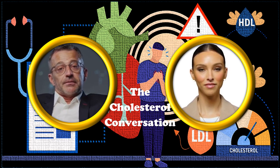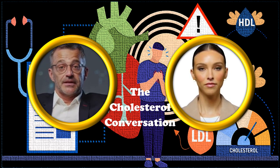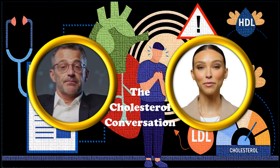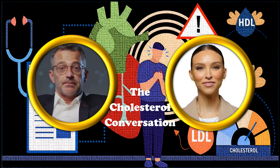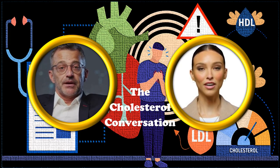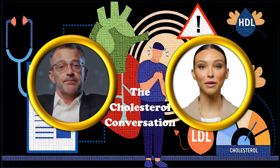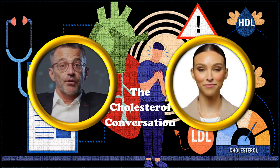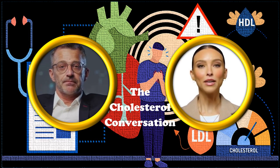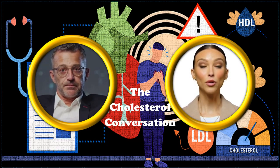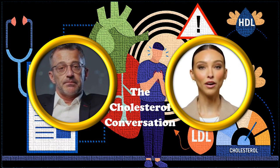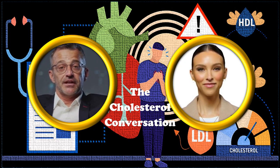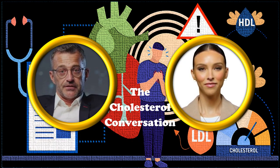There have been questions about that study and how it was put together. Critics pointed out that the countries Keys chose may not have given the full picture. Countries like France and Switzerland had high saturated fat intake but lower heart disease rates, yet weren't included. Countries that seemed to fit his theory, like Yugoslavia and Finland, were. So questions about selection bias naturally came up.